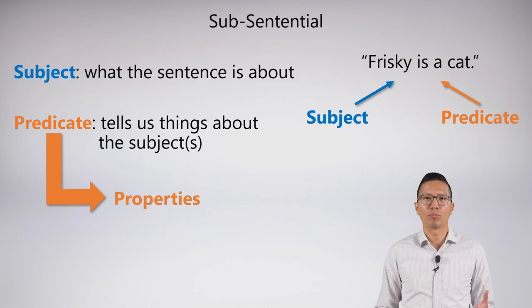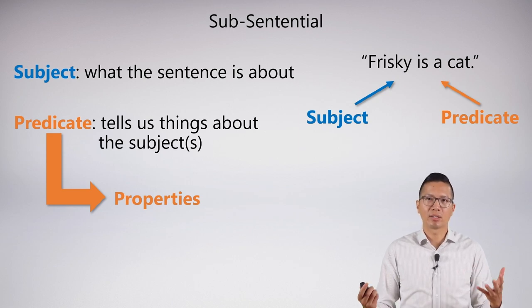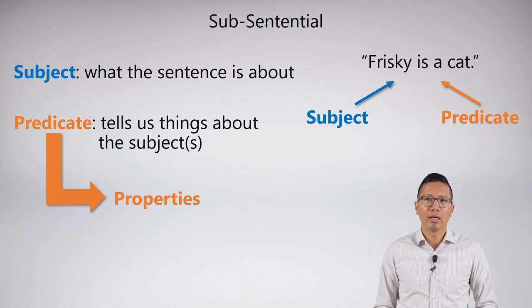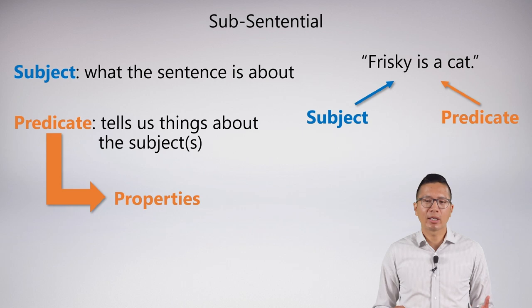Our goal in this first video on predicate logic is to make sense of subjects and predicates. We know from the intro video that we can have the sentence 'Frisky is a cat,' with a subject and a predicate, and the predicate tells us properties about the subject.